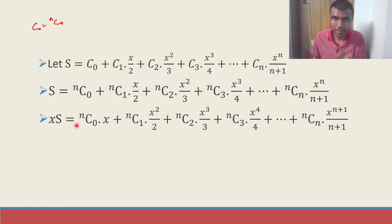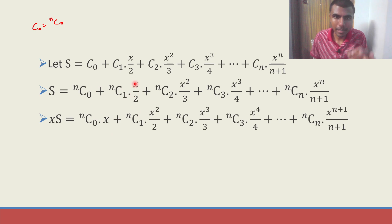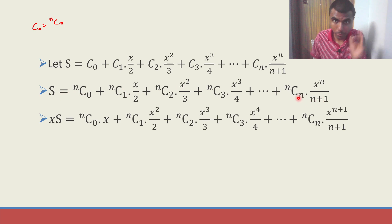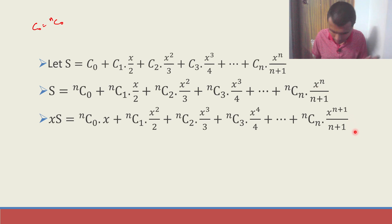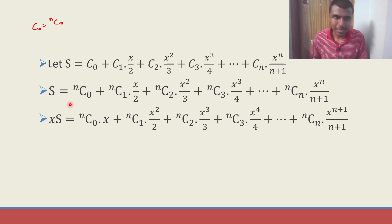I multiplied both sides with x. So xS equals nC0 into x. Now here already x by 2 is there, so nC1 into x by 2 into x gives x square by 2. Likewise I get x cube by 3, x power 4 by 4, and x power n into x is x power n plus 1 by n plus 1. Each term got multiplied by x — I just multiplied each term with x.